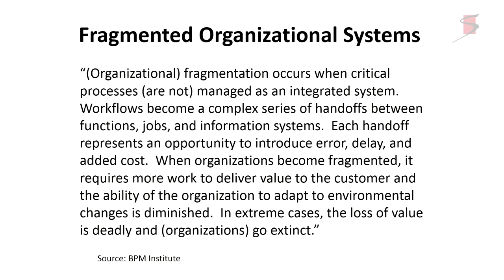In extreme cases, the loss of value is deadly and organizations go extinct. There's a book by Joseph Tainter about how societies become extinct. His theory is very simple: every time a new issue emerges in a society, we create a level of process to deal with it — we add a layer of complexity. Even when the problem disappears, those layers stay because there are people in those jobs. Eventually the society reaches the point where it cannot add another layer of complexity — it has no resources to deal with it, and over time things crumble. You could argue some of that with the Roman Empire.